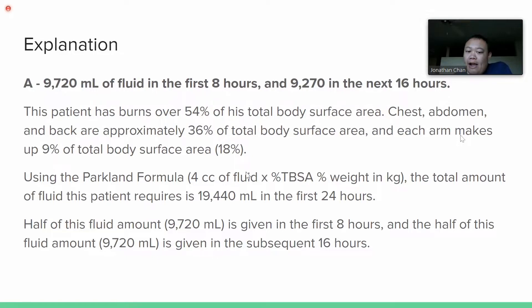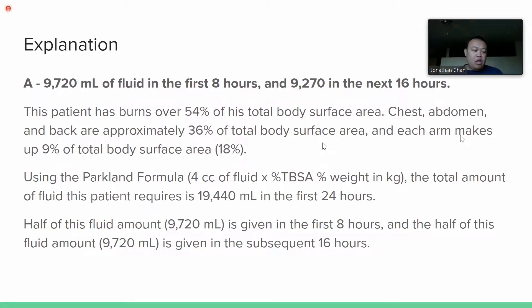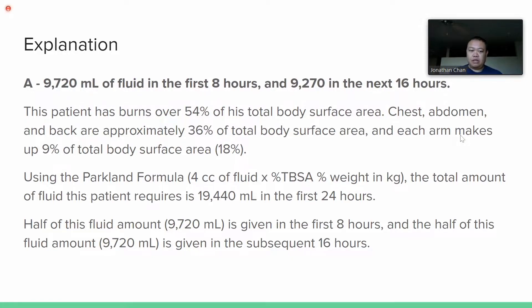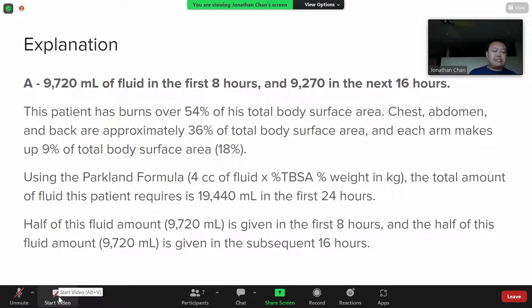After you get this number, divide it in half. Give half in the first 8 hours as a bolus, and then half in the next 16 hours as a maintenance drip. This is a good tool to estimate how much fluid a burned patient should receive.